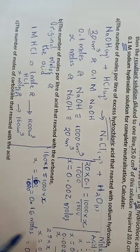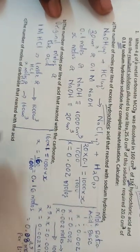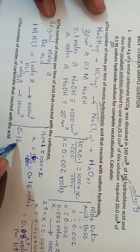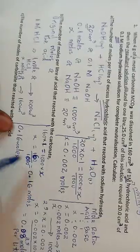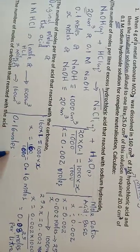These 0.16 moles are the moles of HCl that were there initially. Out of these, some moles reacted with the carbonate and some reacted with the sodium hydroxide. Those that reacted with the sodium hydroxide are 0.08 moles. So I subtract 0.08 from 0.16, which gives 0.08 moles of HCl that reacted with the carbonate.